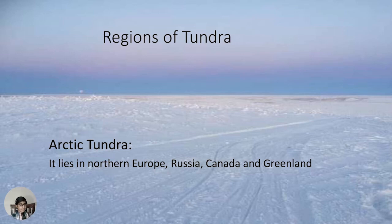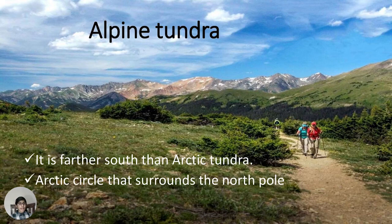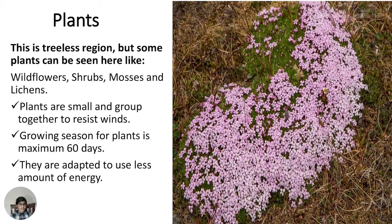Regions of tundra: Arctic tundra lies in northern Europe, Russia, Canada, and Greenland. Alpine tundra is further south than the Arctic tundra, or beyond the Arctic circle that surrounds the North Pole. It is a treeless region where some plants can be seen — white flowers, shrubs, mosses, lichens, and small plants grow in groups to resist the cold. The growing season for plants is a maximum of 60 days. Plants are adapted to use less energy.